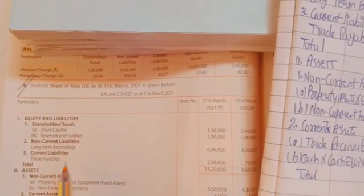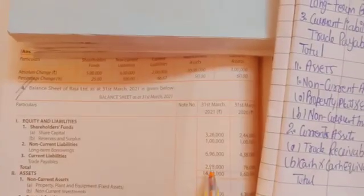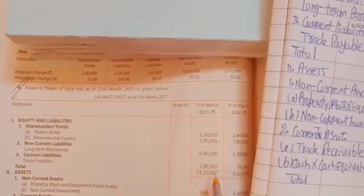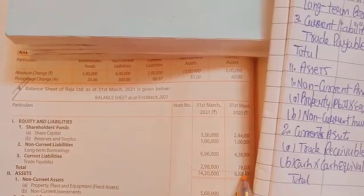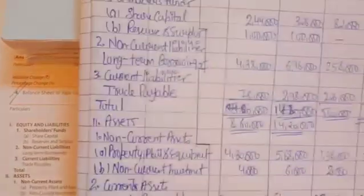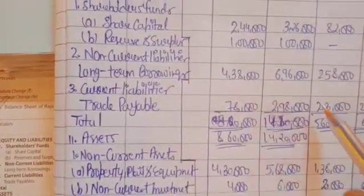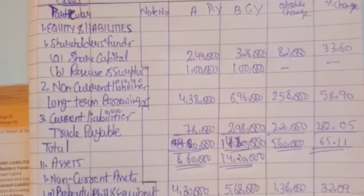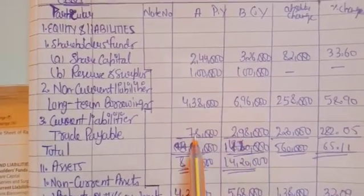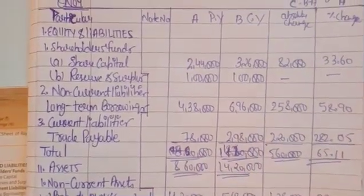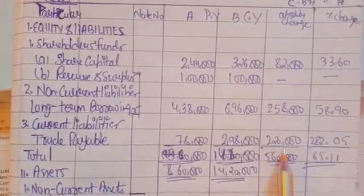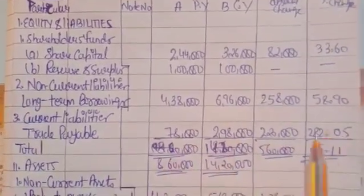Current liabilities — Trade payables: current year is $2,98,000 and previous year is $88,000. We calculate the absolute change by taking current year minus previous year to get the difference, then compute the percentage change accordingly.